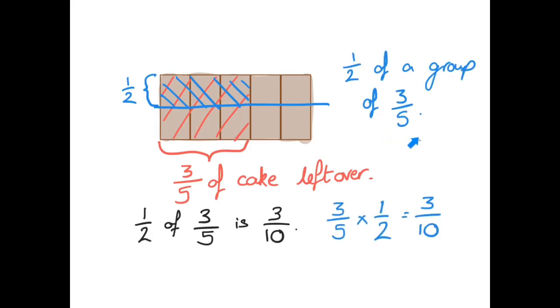To write this as a multiplication, we'd write it out like this. Three fifths multiplied by one half equals three tenths. As you've probably noticed, if we multiply the numerators, three times one, we get three. And if we multiply the denominators, five times two equals ten.